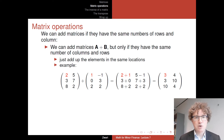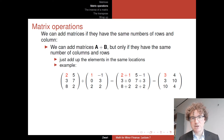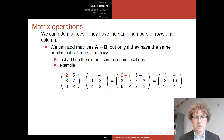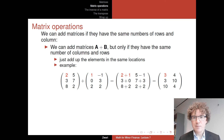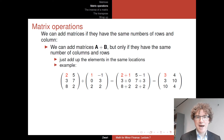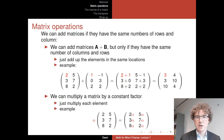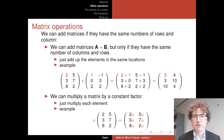Here we have an example with two matrices that each have three rows and two columns. Adding these two matrices simply means adding them element by element. In the top left corner we have a two and a one, and two plus one equals three in the top left corner of the result. We do the same for all other elements — just add up element by element per location.